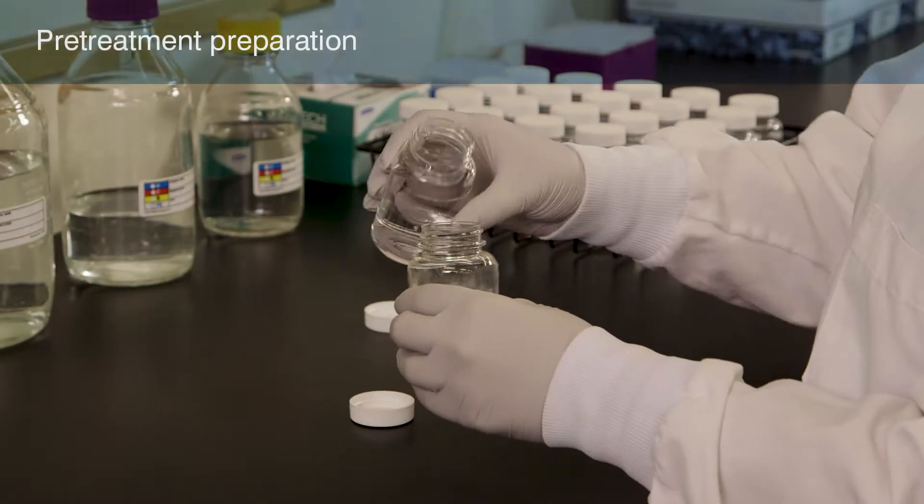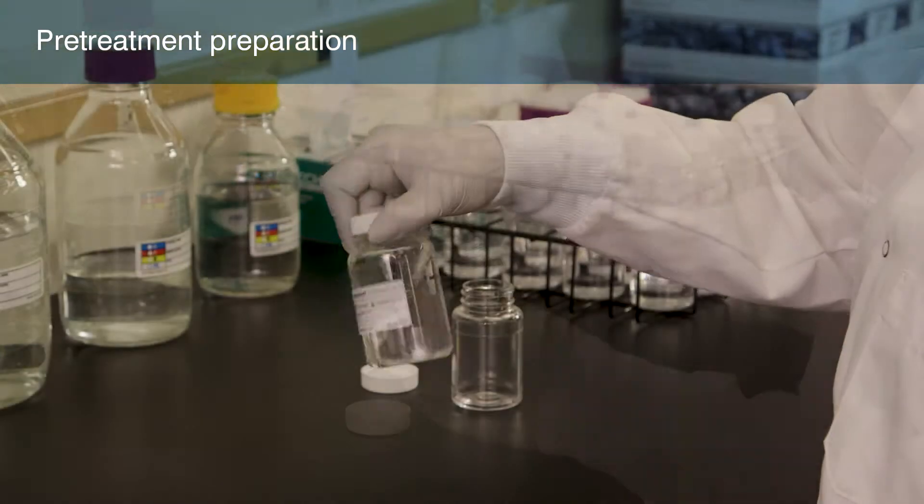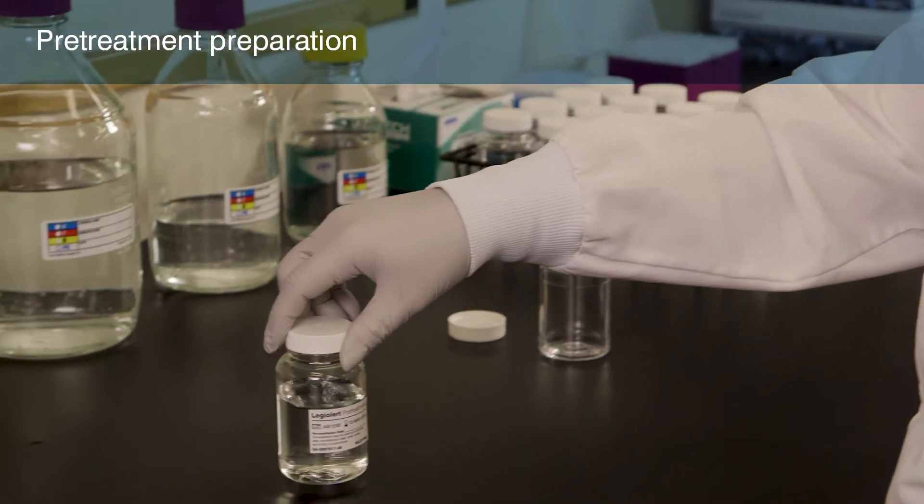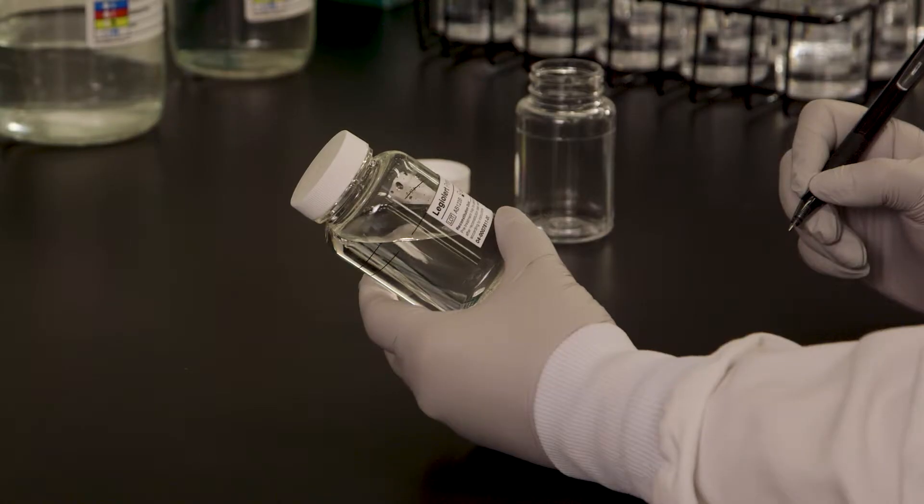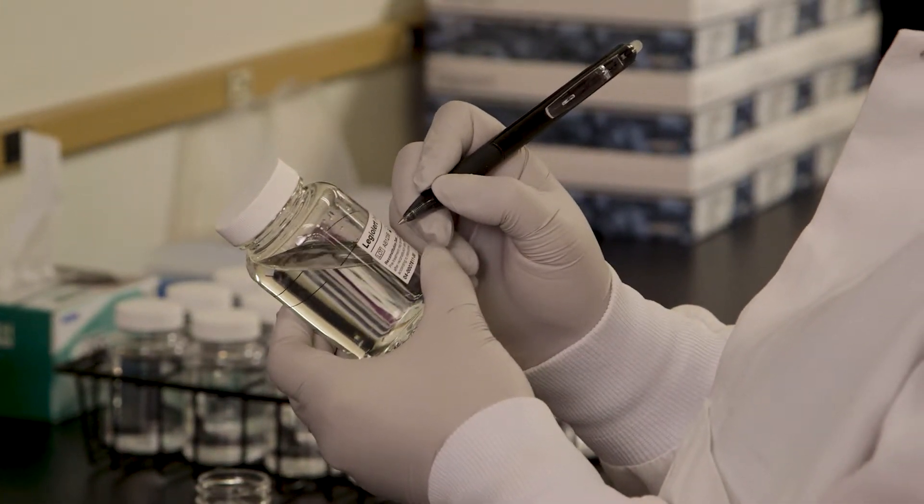Reconstitute the LEGALERT pretreatment by adding 100 mL of sterile DI water to the vessel and then shake until fully dissolved. Mark the preparation date on the bottle. Refer to the LEGALERT pretreatment product insert for more information.